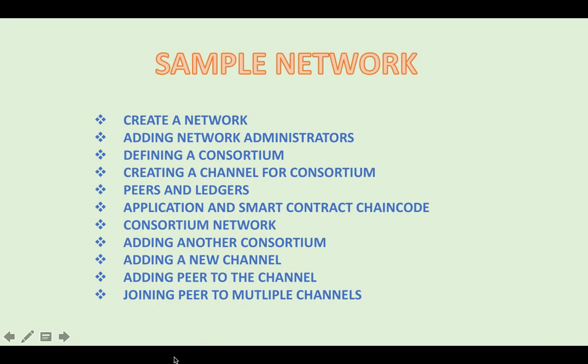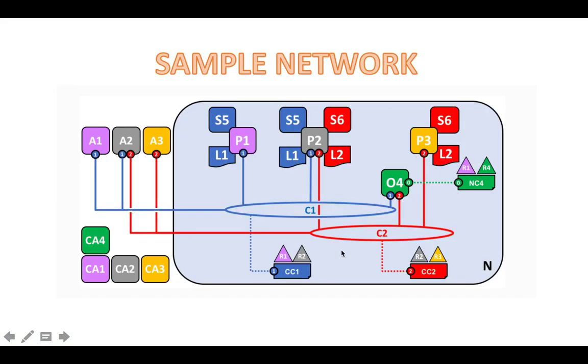I'll be showing the final product of how the channel would be. This picture has been taken from the Hyperledger documentation and I'll be explaining from the starting of how we form the network and the completion of this full network. If you could see here, there are four organizations: R1, R2, R3, and R4.